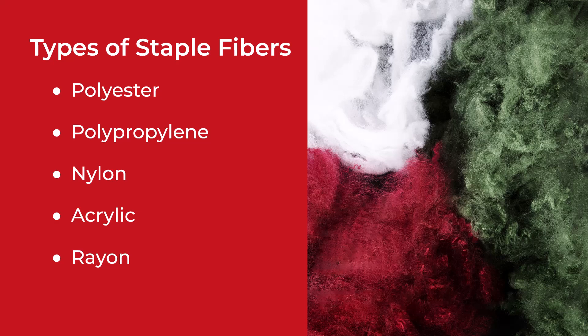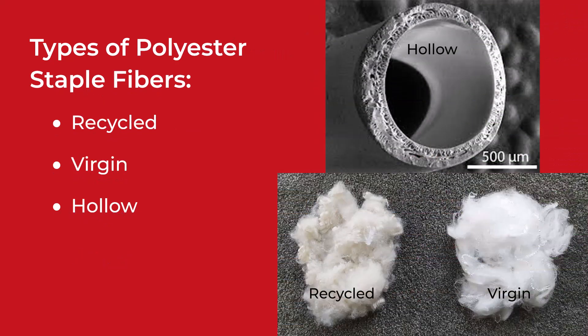Nylon offers strength, elasticity, and resistance to abrasion. It is used in applications like hosiery and activewear. Acrylic is used as a wool substitute due to its softness, warmth, and lightweight properties. Rayon, often referred to as artificial silk, is known for its versatility and ability to mimic the feel of natural fibers.